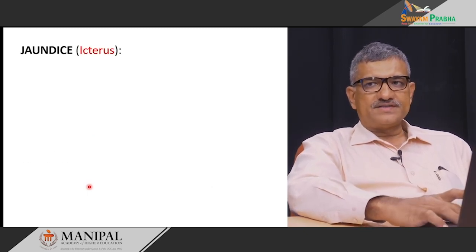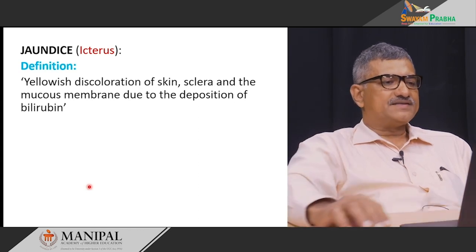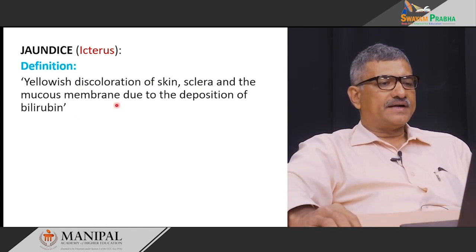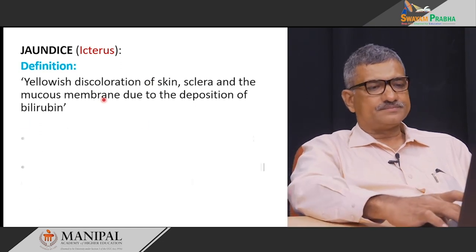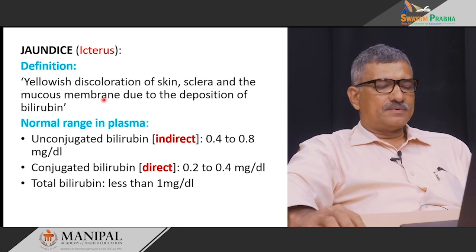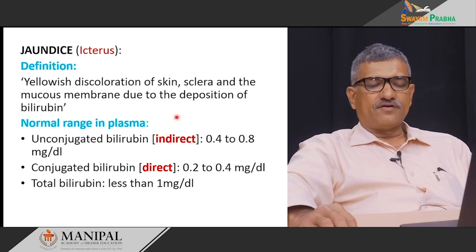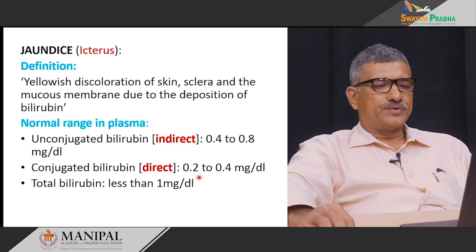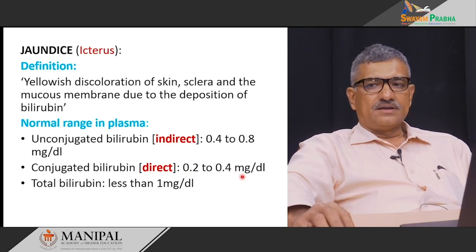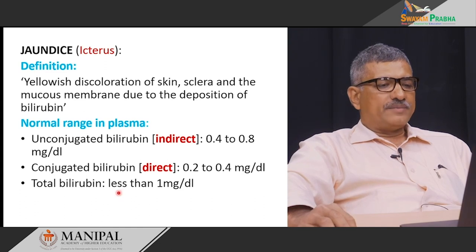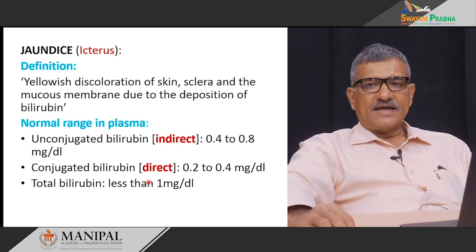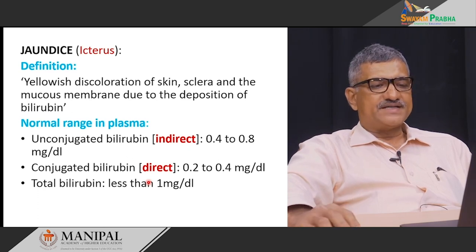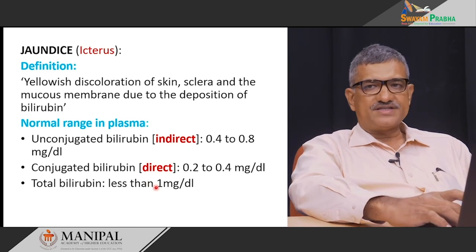Jaundice is also known as icterus and is defined as the yellowish discoloration of skin, sclera, and mucous membrane due to the deposition of bilirubin. The normal range for unconjugated bilirubin in plasma is 0.2 to 0.4 milligrams per deciliter, and for conjugated bilirubin is also 0.2 to 0.4 milligrams per deciliter. The normal plasma level of total bilirubin is less than 1 milligram per deciliter. When plasma bilirubin exceeds 1 milligram per deciliter, the condition is known as jaundice.